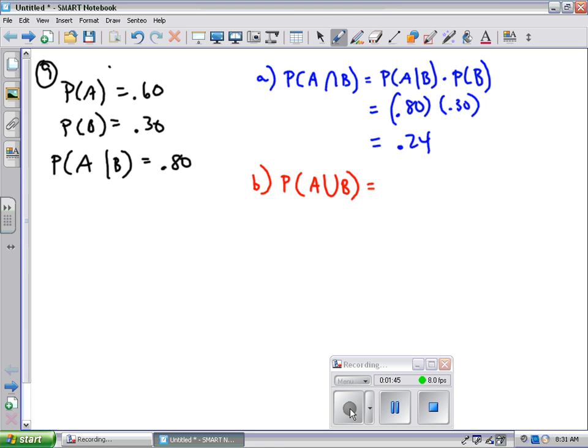So A or B is going to be the probability of A plus the probability of B minus their intersection. And again, I'm subtracting their intersection because I've counted it twice. So the probability of A is 60%, the probability of B is 30%, and subtracting the and is what I did back in part A. So the answer here should be 66%. I have a 66% chance of winning at least one contract.